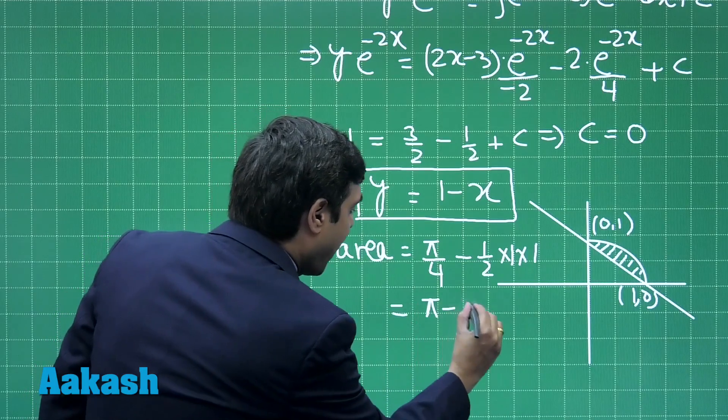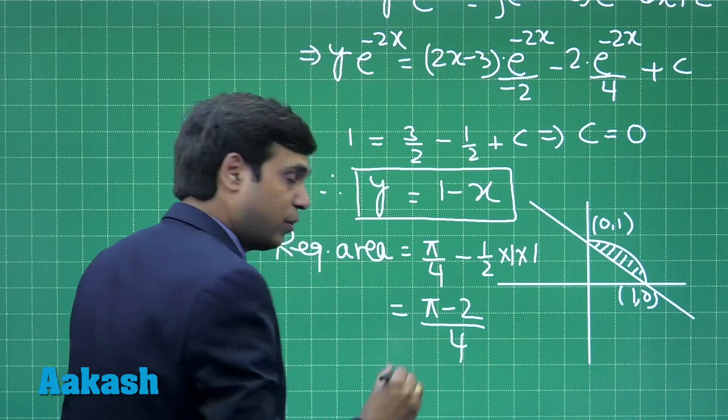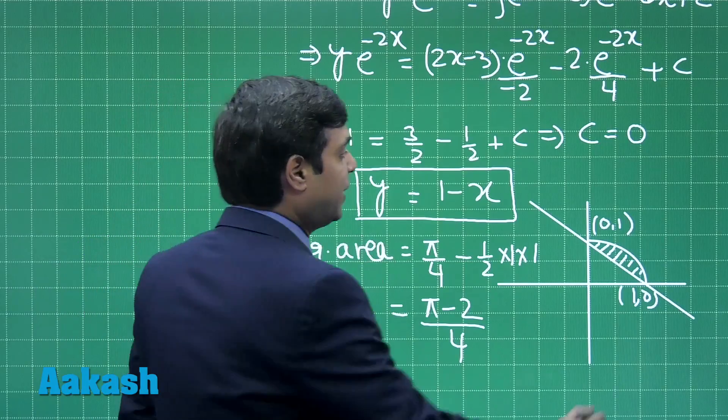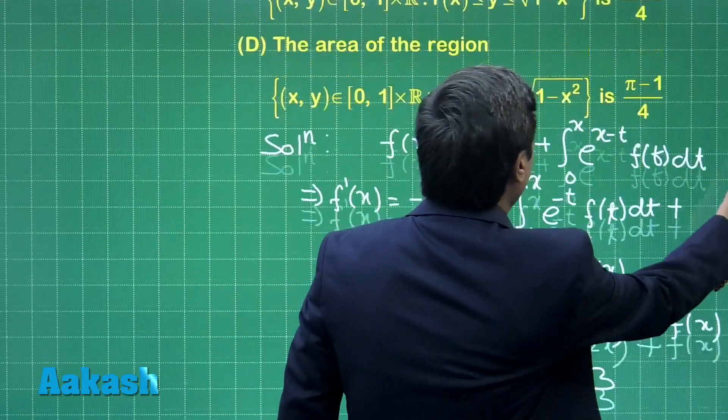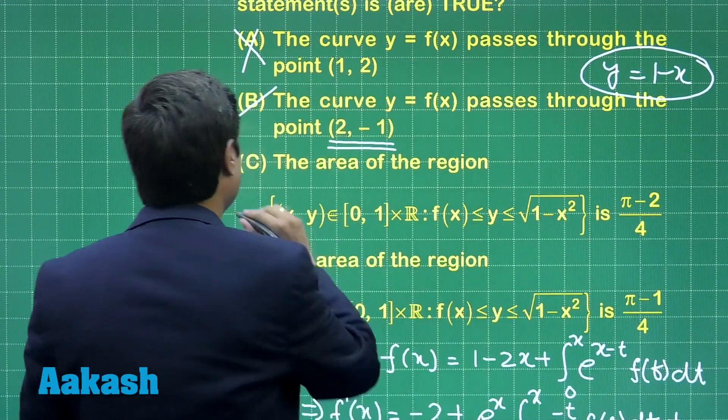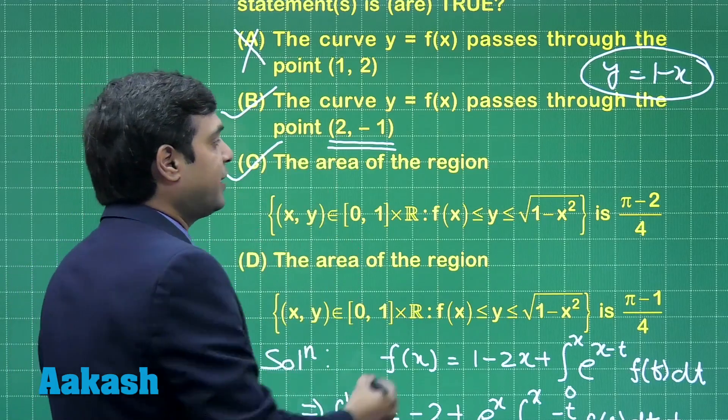This is (π - 2)/4. The required area is obtained as (π - 2)/4. Looking at the options, we can see clearly option C is the correct one.